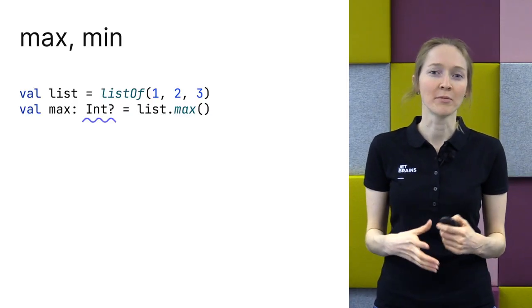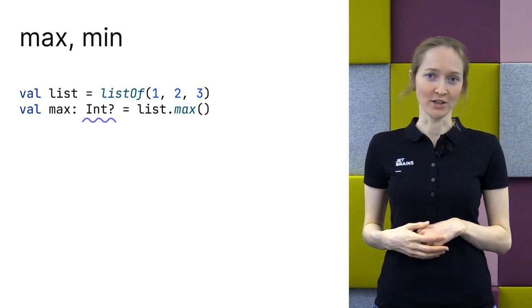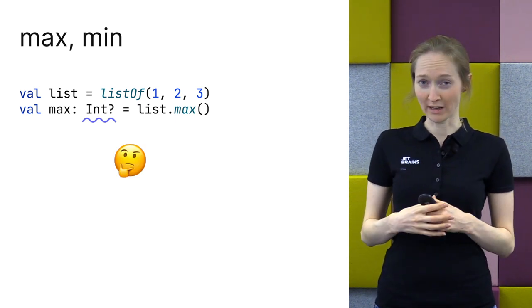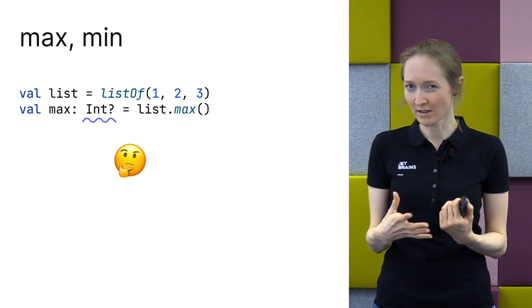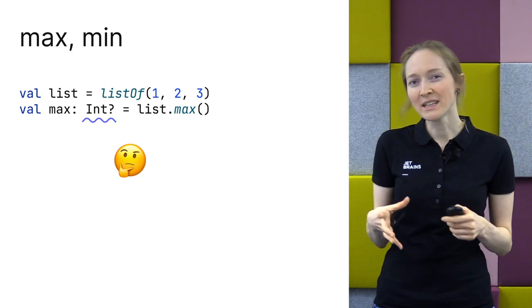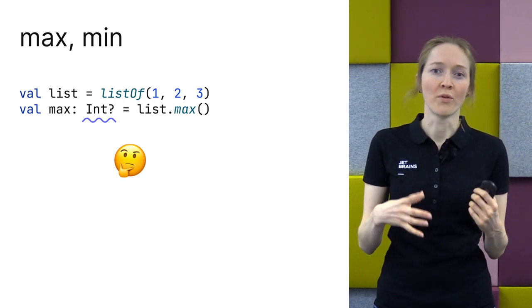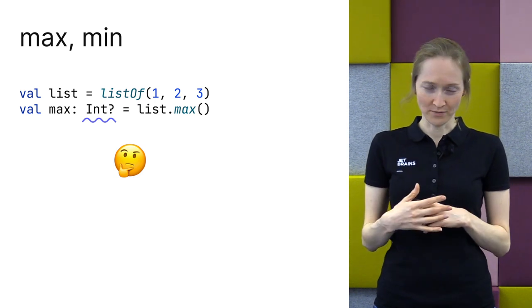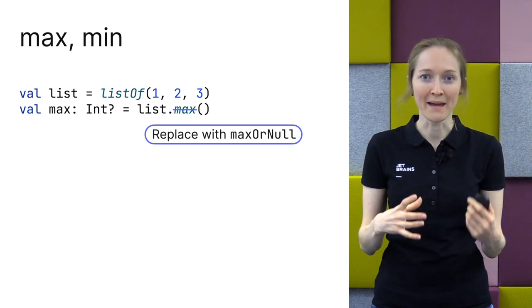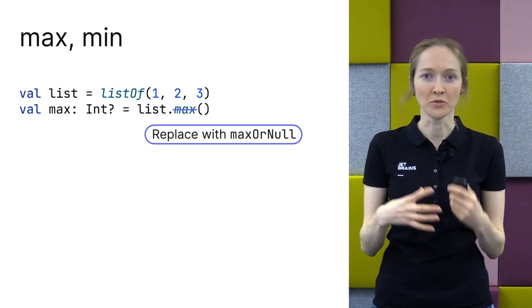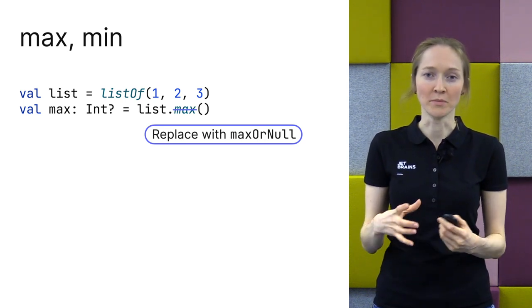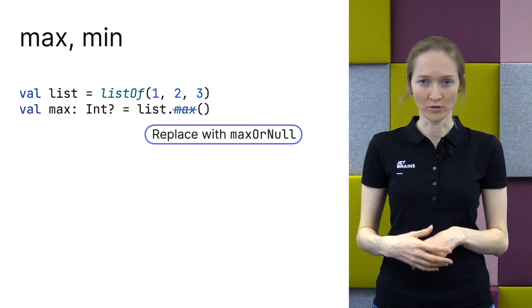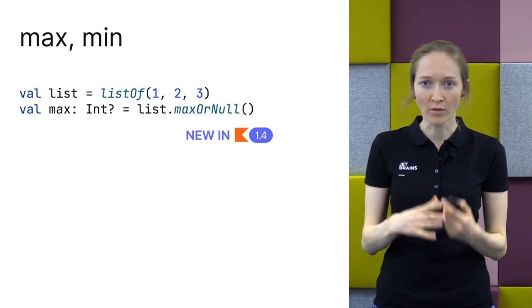Next, I want to highlight a couple of important functions that didn't previously conform to the naming convention: the max and min functions. You probably noticed that both these functions were returning nullable values, so you would have expected them to have the orNull suffix. These min and max functions were introduced in Kotlin 1.0, but now they are inconsistent with the whole library philosophy. So we decided to change that. In Kotlin 1.4, max and min functions are deprecated. IntelliJ IDEA and Android Studio suggest replacing them with maxOrNull and minOrNull functions respectively. These new functions are just synonyms — they behave exactly the same as the old ones. You can apply an automatic quick fix to replace all occurrences in your code base.